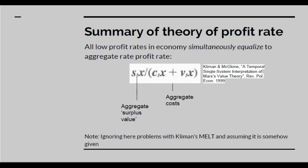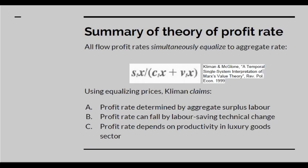Next, let's look at Kliman's theory of the rate of profit. Kliman's theory says that the profit rate is set by the total aggregate surplus value and aggregate costs. We're going to ignore problems with the MELT and assume it's somehow given. All flow rates of profit in the economy simultaneously are assumed to equalise to this aggregate profit rate, so all sectors are assumed to simultaneously get this aggregate rate.